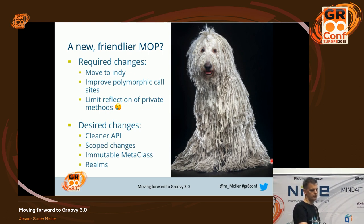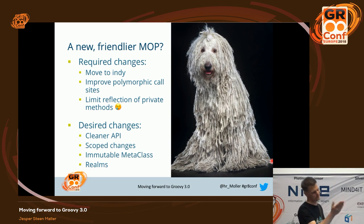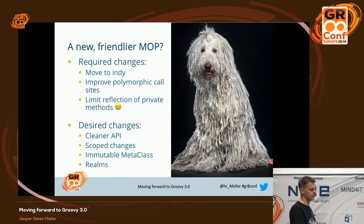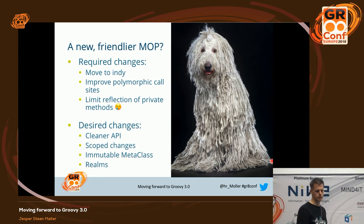We'll also be limited somewhat in which private methods we can call. Those are the required changes to the API. But there are also desired changes that have been described in the past — a cleaner API, the ability to scope MetaClass changes better, and to keep them immutable. You can make MetaClass changes but only within certain realms. The big issue is that it's a lot of work, and I'm not sure how these things are going to be prioritized. I get the idea that the module system is something we need to address if we want Groovy to stay relevant in all of the Java ecosystem.